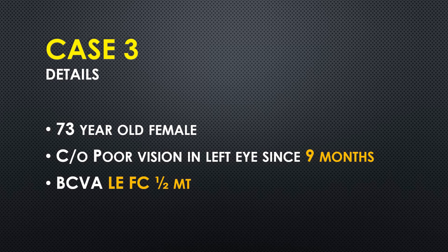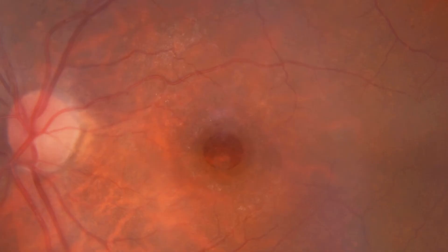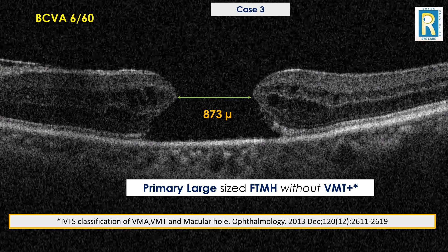Her best corrected visual acuity was finger counting at half a meter. On examination there was a large full thickness macular hole with some elevation around it — this is the subretinal fluid cuff on the edges of the macular hole. The OCT showed the hole's aperture size was 873 microns, more than 400 microns, and vitreomacular attachment was absent — by these advanced stages the vitreous is completely separated. This was a case of a primary large-sized full thickness macular hole without vitreomacular traction.